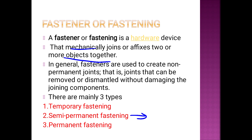Examples of permanent fastening are welding and riveting. For temporary fastening, examples are nut, bolt, screw, and stud. For semi-permanent fastening, examples are soldering and brazing. For permanent fastening, examples are welding and riveting.